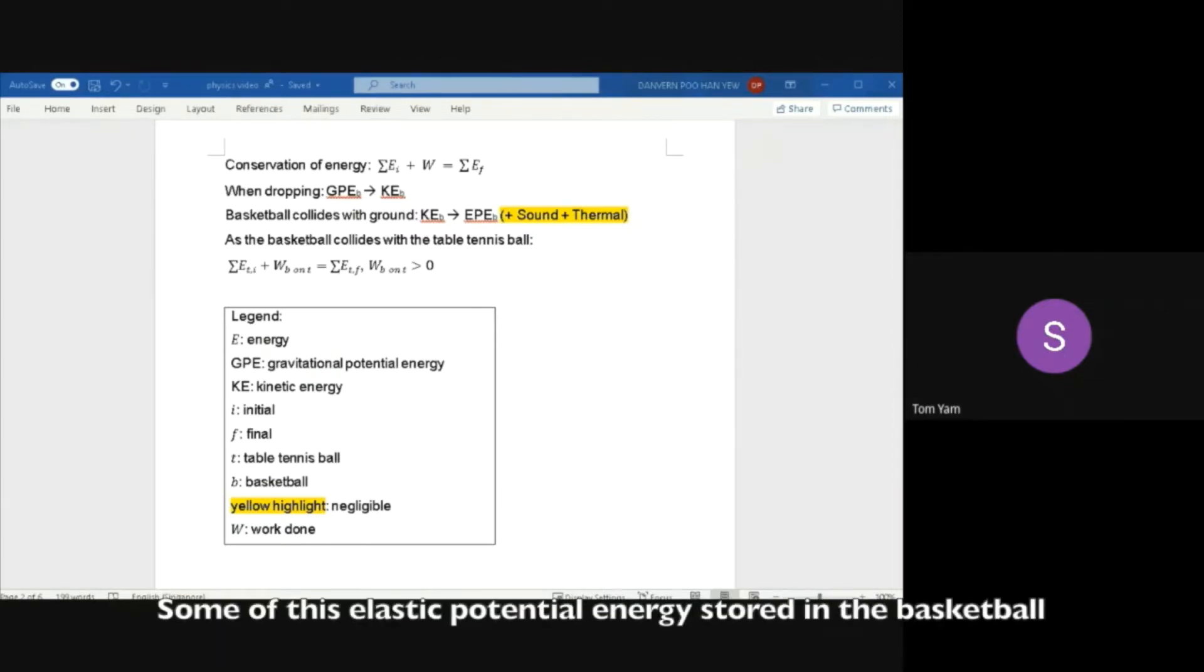Some of this elastic potential energy stored in the basketball is then transferred to the table tennis ball as positive work is done by the basketball on the table tennis ball when they collide.